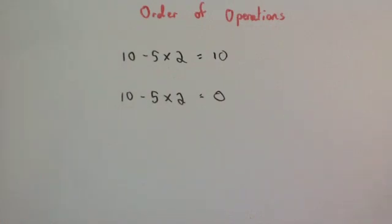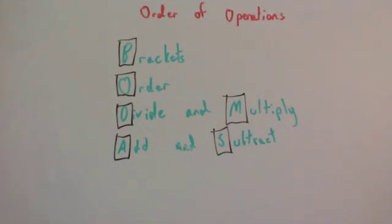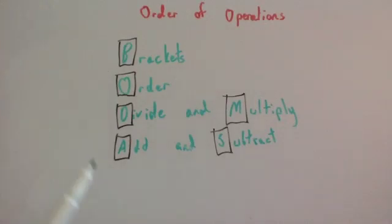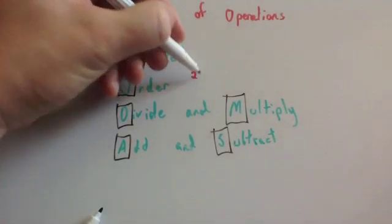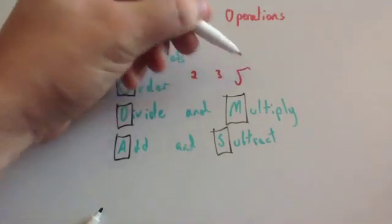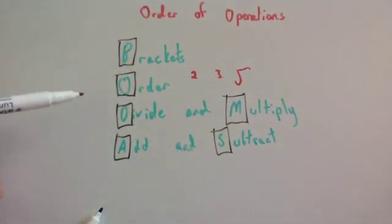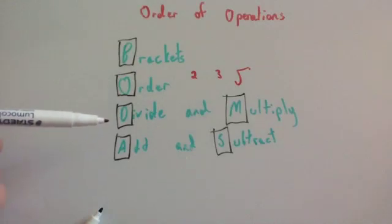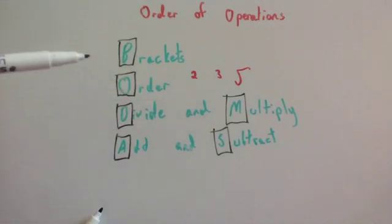Some people call it BODMAS. This is the correct order of operations: do your Brackets first, then any Orders — so that would be squares, cubes, or square roots, that type of thing — then any Division or Multiplication, and then any Addition or Subtraction.